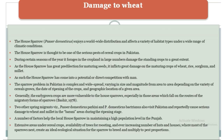Other migratory sparrows — Passer domesticus, P. pyrrhonotus, and P. domesticus bactrianus — also visit Pakistan and repeatedly cause serious damage to wheat and millet in the barani areas during the ripening stage. Several factors help local sparrows maintain high population levels in Punjab, including extensive areas under cereal crops, availability of trees for roosting, and the ever-increasing number of houses where most sparrows nest, creating an ideal ecological situation for the sparrow to breed and multiply to pest proportions.